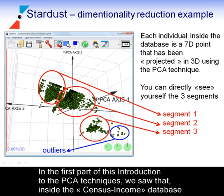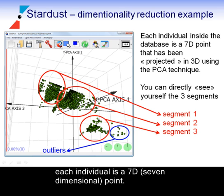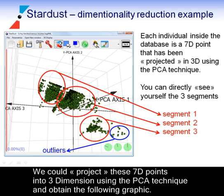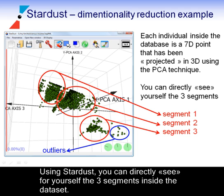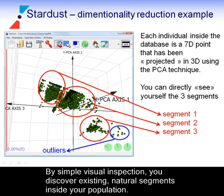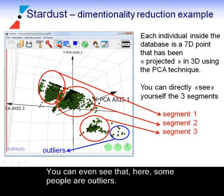In the first part of this introduction to the PCA techniques, we saw that inside the census income database, each individual is a 7D, 7-dimension, point. We could project these 7D points into 3 dimensions using the PCA technique and obtain the following graphic. Using Stardust, you can directly see for yourself the three segments inside the dataset. By simple visual inspection, you discover existing natural segments inside your population. You can even see that some people are outliers.